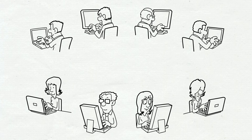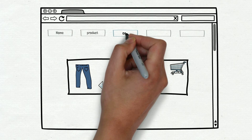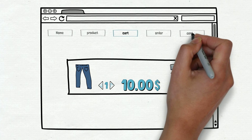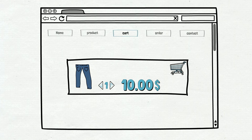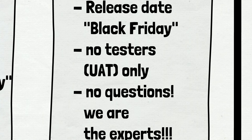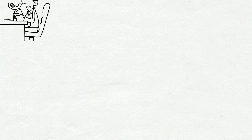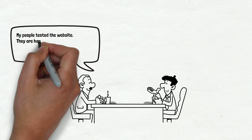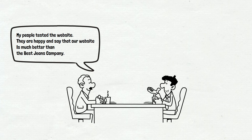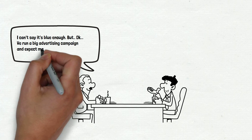Developers develop the website while testers just sit on social media. In a couple of months of hard work, the final version is ready to be tested. There are 5 pages in total: Home, Product, Cart, Order, and Contact, with a lot of functionalities common for online shops. Testers are not involved — the customer wants to test the website on his own, which is called user acceptance testing. The customer found no bugs and says everything is okay. There is a tiny issue with the color, but it doesn't block the release on Black Friday.